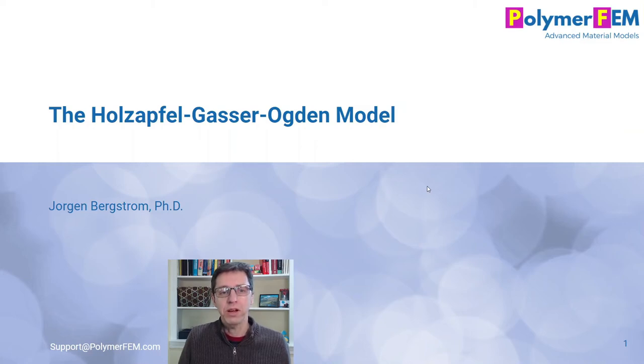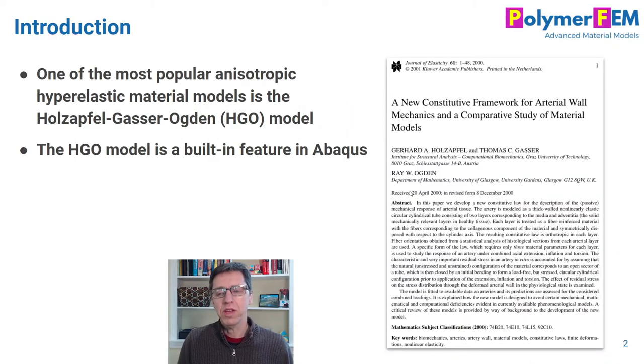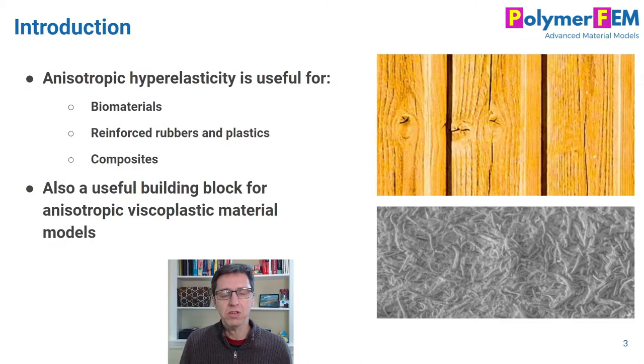Hey and welcome to this tutorial on the Holzapfel-Gasser-Ogden model, the HGO model. The HGO model is a very popular anisotropic hyperelastic model that was developed in order to study the non-linear response of biomaterials, specifically arteries. It's a built-in feature in Abaqus and it's a really good and versatile model, which is why I often use it for other applications as well.